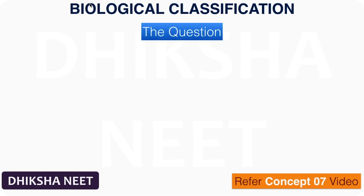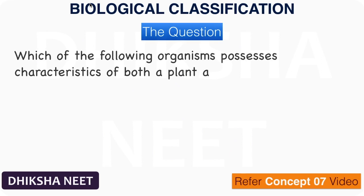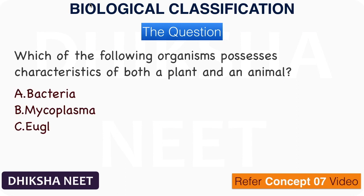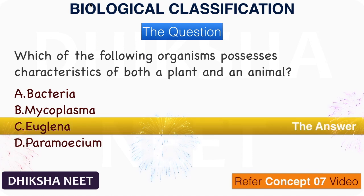The question: Which of the following organisms possesses characteristics of both a plant and an animal? A. Bacteria, B. Mycoplasma, C. Euglena, D. Paramecium. The answer is option C. Euglena.